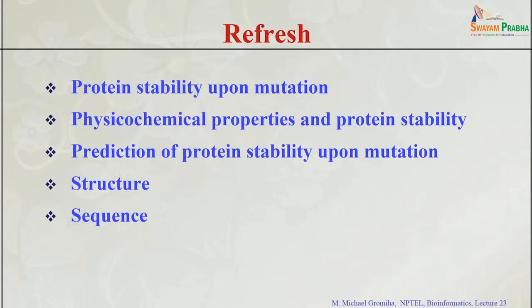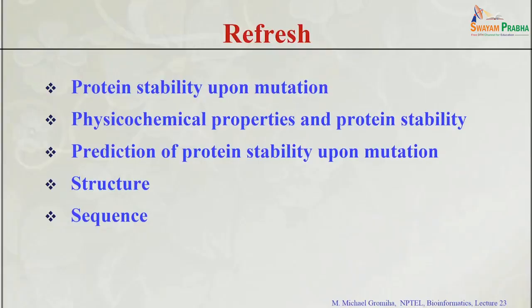In the last class we discussed about protein stability, specifically stability upon mutation. We discussed a database — the ProTerm database — which deals with thermodynamic stability. Using ProTerm we tried to analyze the important factors which influence the stability of mutants at different locations, relating physicochemical properties with experimental stability using correlation coefficients. We identified that some properties are important for stability — for example, in buried mutations, hydrophobicity has a high positive correlation with stability.